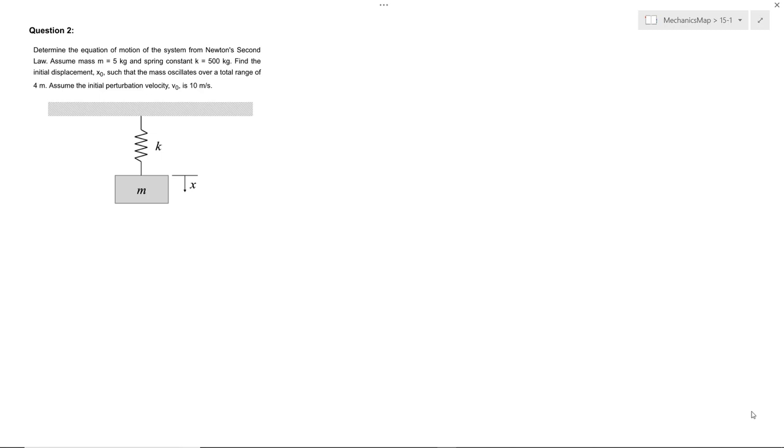Here we have a problem with a hanging mass supported by a spring. We're given the mass and the spring constant, and we're asked to find the initial displacement given to the system such that the mass oscillates over a total range of 4 meters. We're asked to assume the initial perturbation velocity is 10 meters per second.